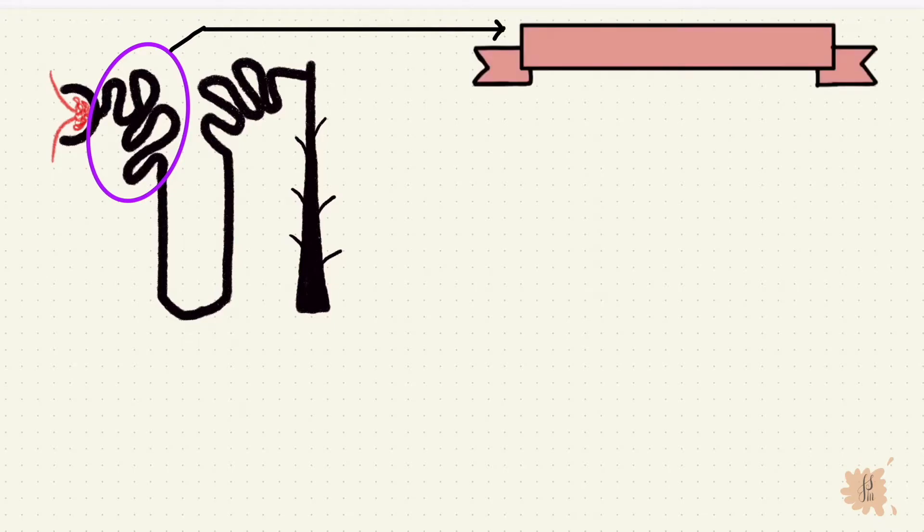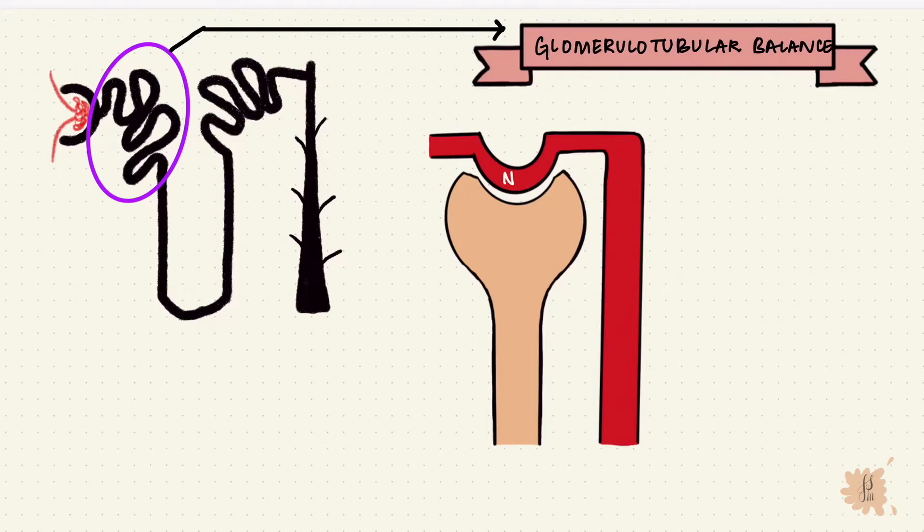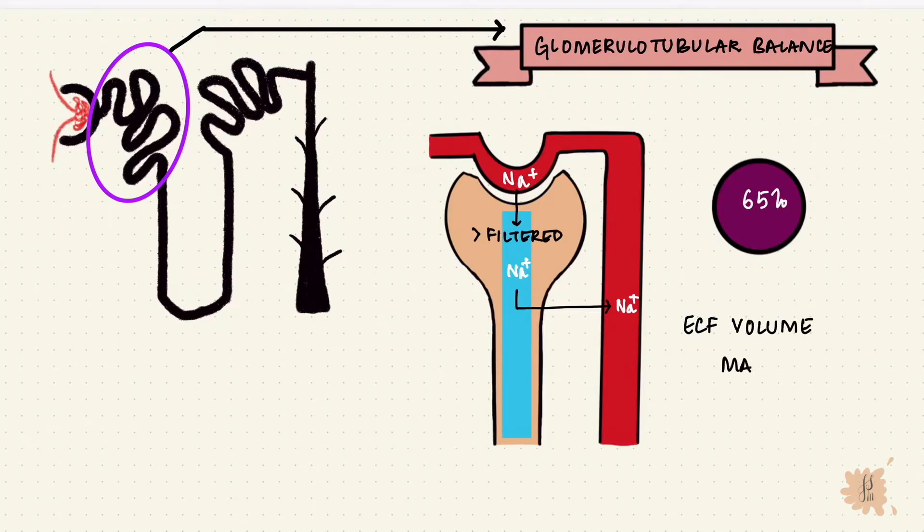The PCT is the site of glomerulotubular balance. Simply put, this means if there's more sodium filtered, there's more sodium reabsorbed. The fraction of sodium reabsorbed remains the same, the 65%. So the ECF volume gets maintained.